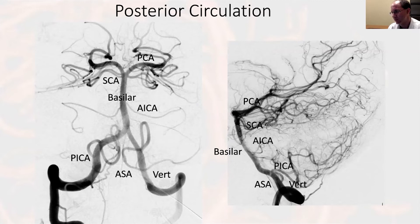Again, you can see the vertebral, the PICA branch, the ASA — the anterior spinal artery — the basilar, the AICA, the SCA, and the PCA.